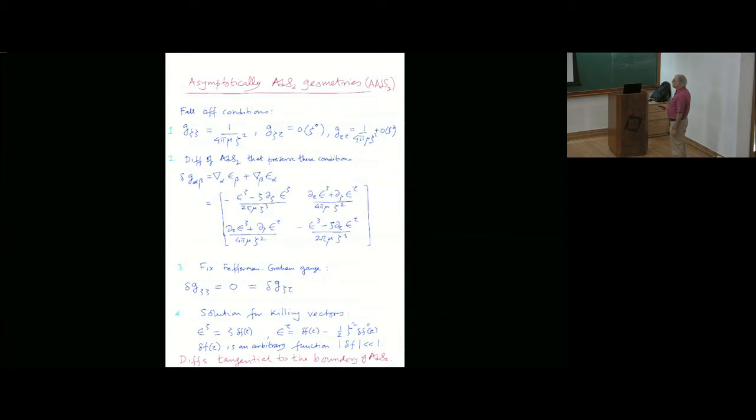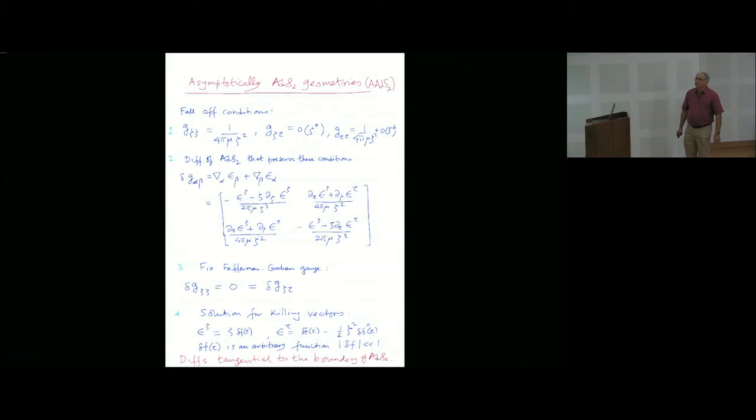Let us first say that the metric components should fall off as such. G xi xi, g xi tau, and g tau tau. Note here, g xi tau is of order one. It's the off-diagonal component. The second point is, let us try to make diffeomorphisms of this metric and try to ask which diffeomorphisms preserve this type of fall off. This is all mimicking the classic work of Brown and Henneaux. But clearly, you have to fix a gauge before you can answer this question. That is the Fefferman-Graham gauge. Once you do that, you have unambiguous solutions.